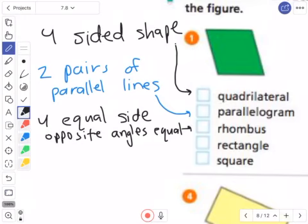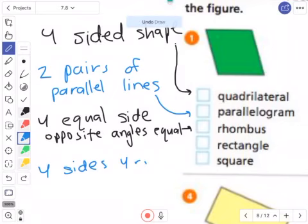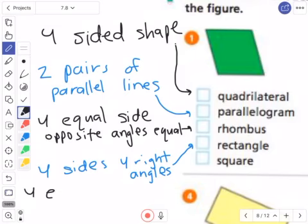It's a rhombus rectangle. We know it has four sides, four right angles. It is square, the last one. Four equal sides and four right angles.